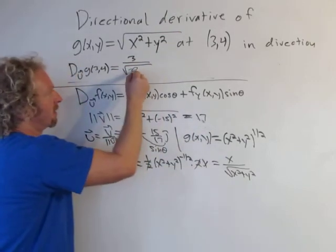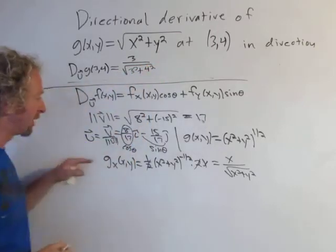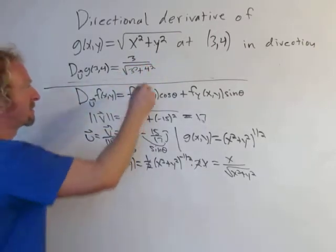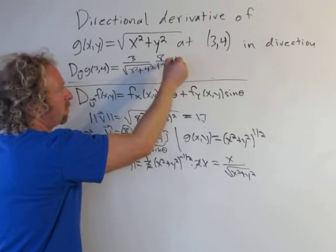So we get 3 squared plus 4 squared. And then we get cosine of theta. But that's going to be 8 over 17. Plus.